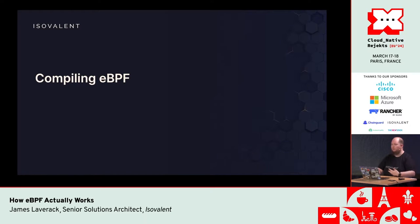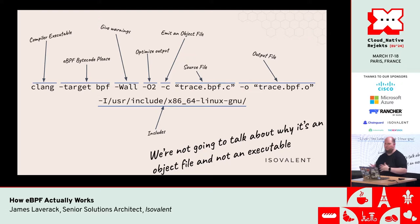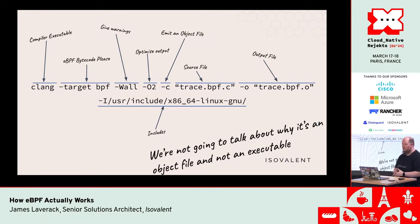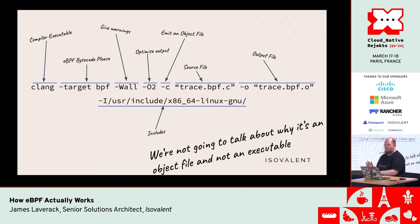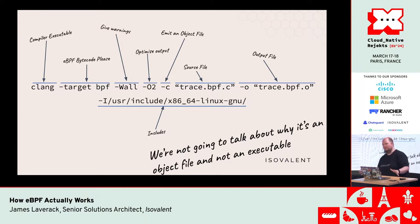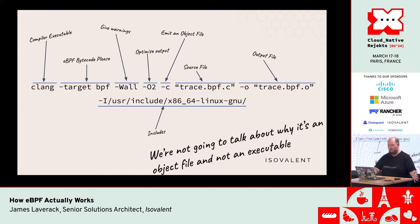So we're going to start by compiling it. The compile line in its most simple form looks like this. The important parts are: we're executing Clang, our compiler; we're telling it we want eBPF; we're giving it our input file, traceBPF.c; and our output file, which is the same with .o. We tell it where our includes are, and importantly that dash-C flag gives us an object file rather than an executable. This is how you compile eBPF into bytecode in its most basic form.